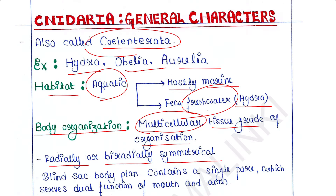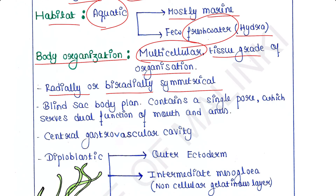Blind sac body plan: the body contains a single pore which serves the dual function of mouth and anus. This type of body plan is called the blind sac body plan, where only a single pore is present and that single pore performs both functions of mouth and anus.